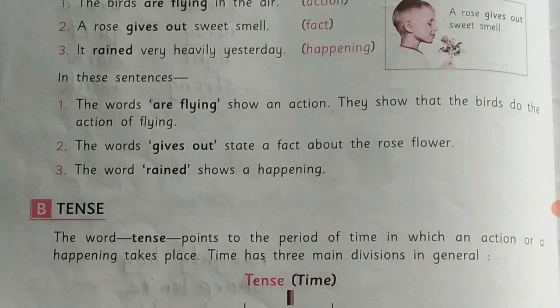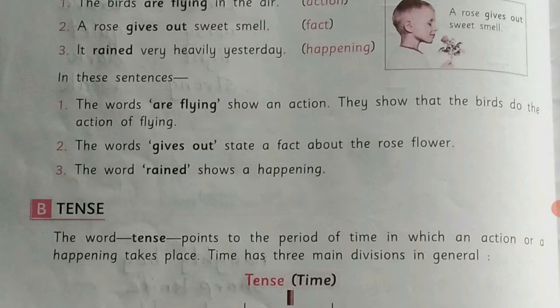The word 'are flying' shows us action — it shows that the birds do the action of flying. We come to know what action the birds are doing: they are flying. In the second sentence, the word 'gives' states the fact about the rose flower — a rose gives a sweet smell. That's a fact. In the third sentence, 'rained' — it rained heavily, very heavily yesterday — that means it happened. What happened yesterday? Rain. So it is a happening.